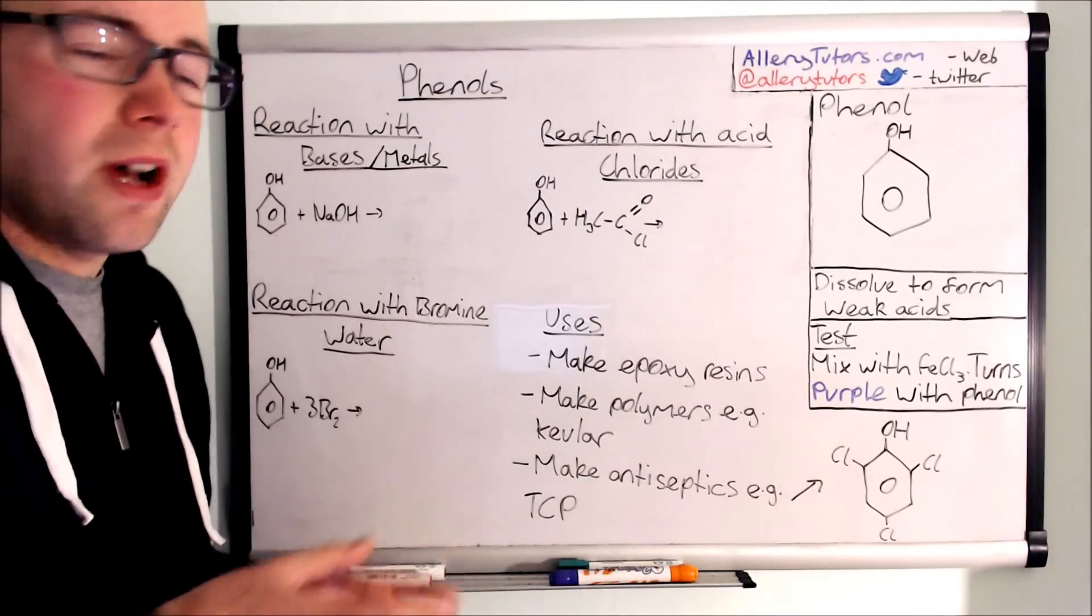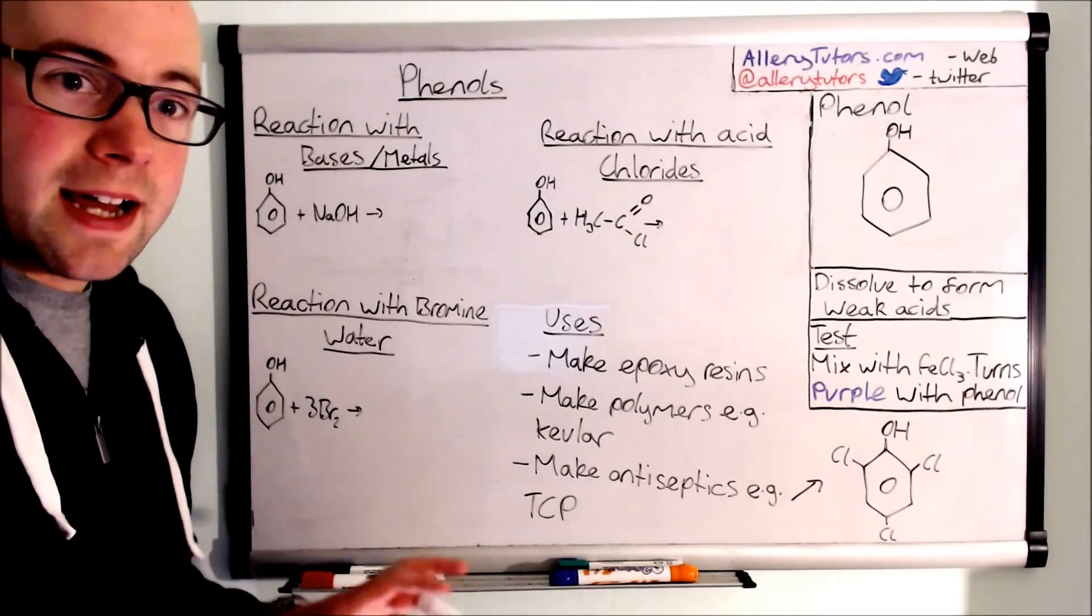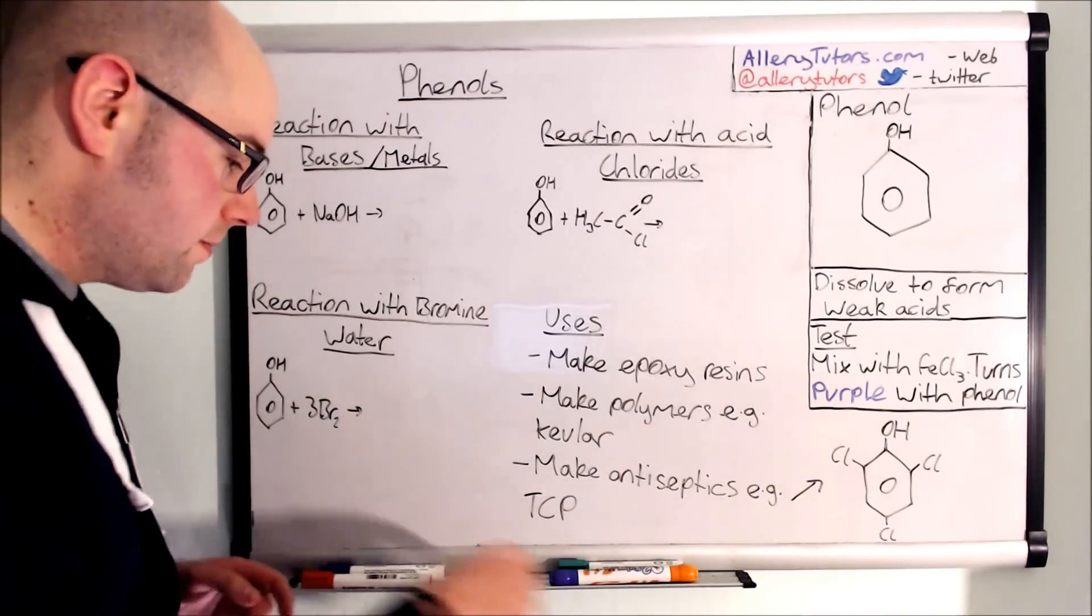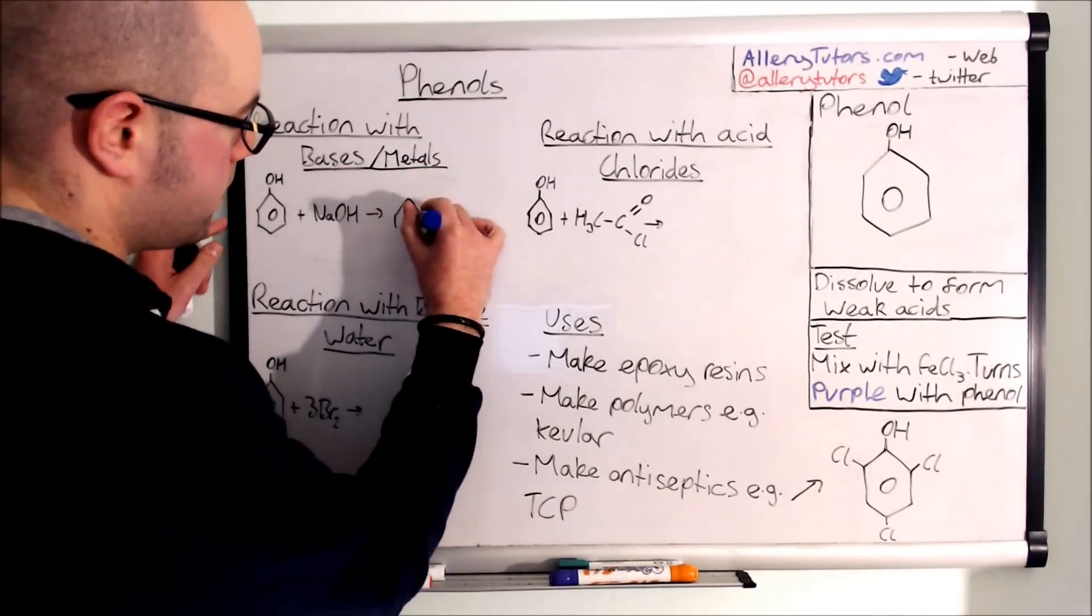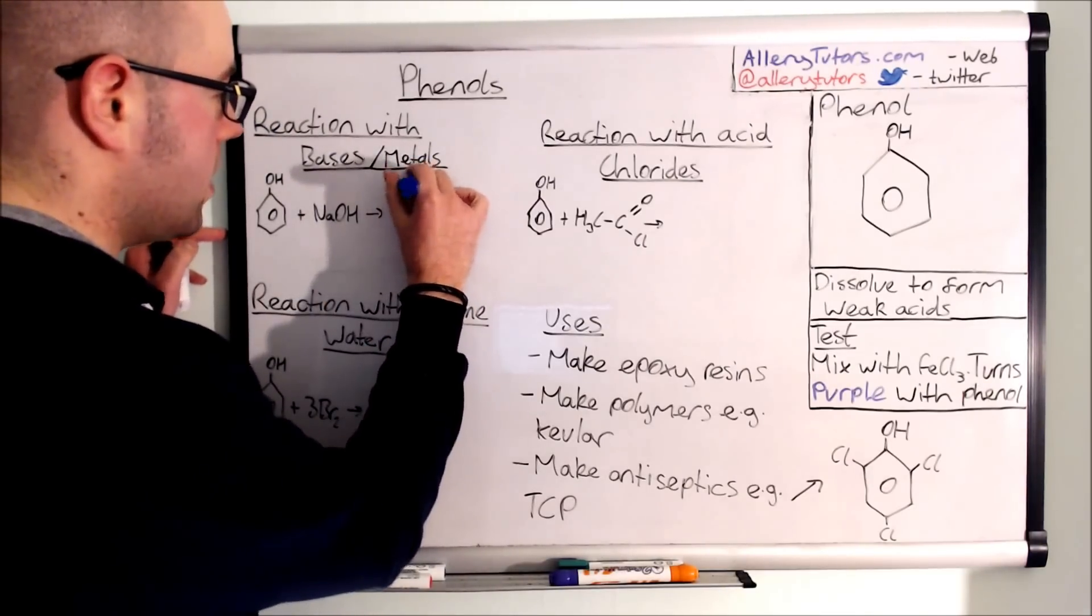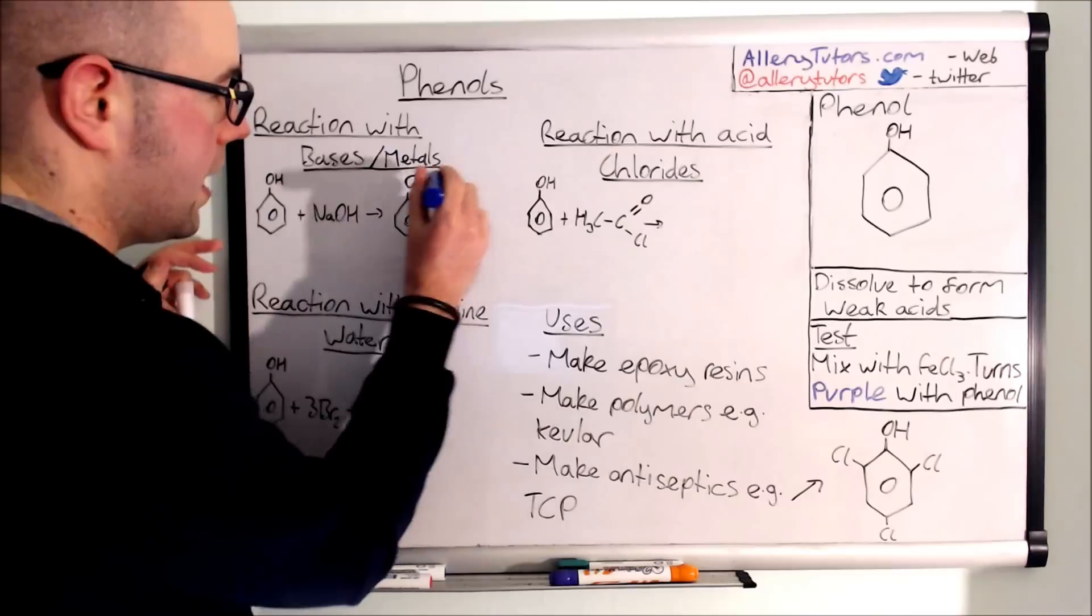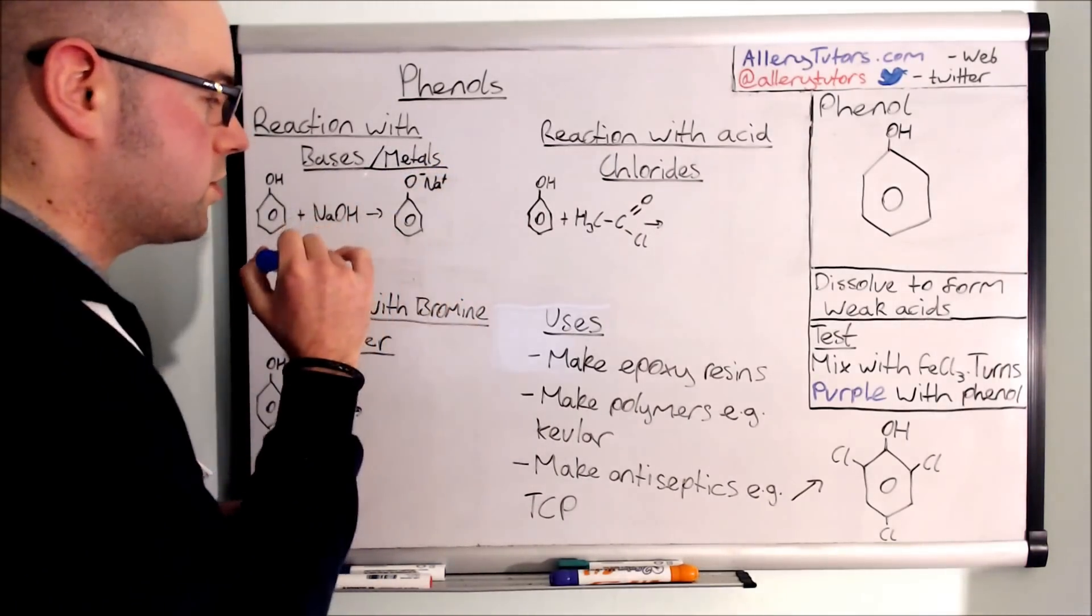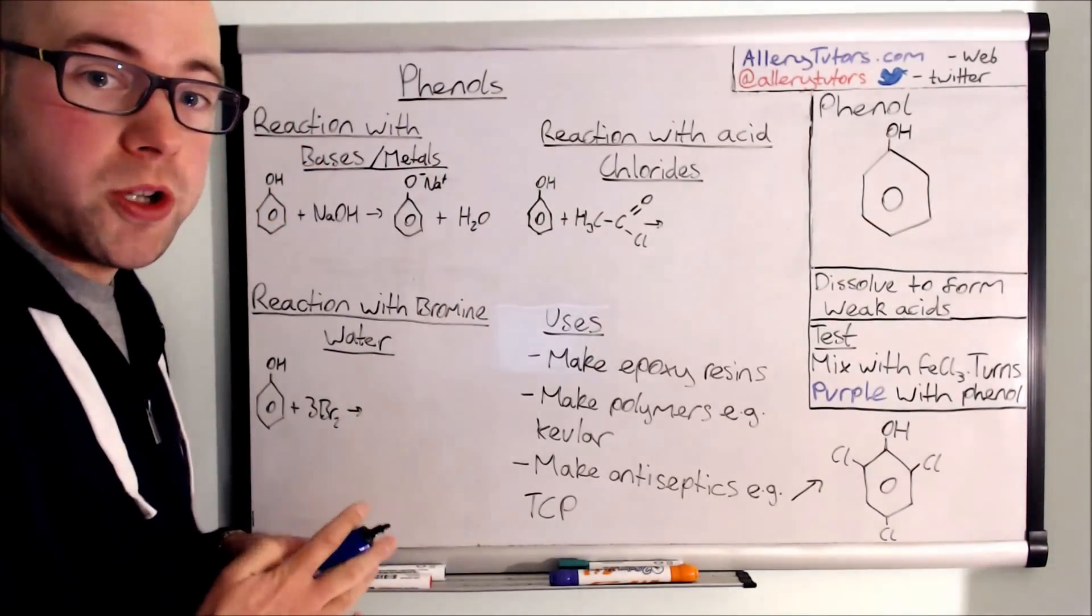I'm going to start with this reaction with bases and metals. Just like standard acid base reactions, you form a salt plus water. We're going to draw our benzene there, and like with any acid base reactions we form a salt. There's our salt there, and we call this sodium phenoxide, and like any other acid base reaction we form water as well.